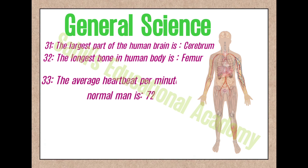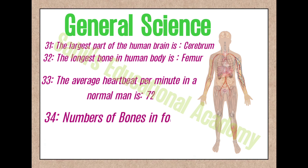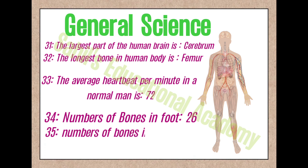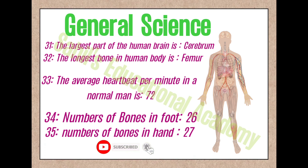33. The average heartbeat per minute in a normal man is 72. 34. Number of bones in the foot: 26. 35. Number of bones in the hand: 27.